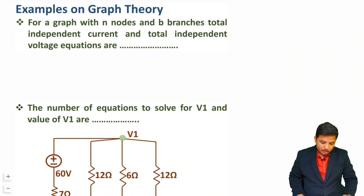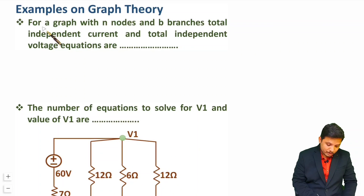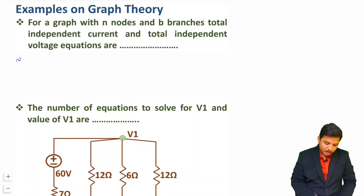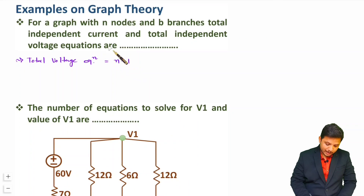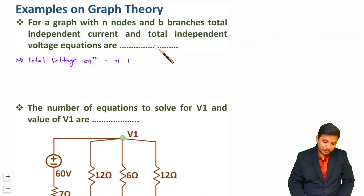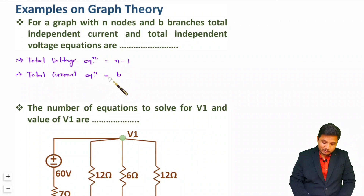Let us see the first question. For a graph with n nodes and b branches, the total independent current and total independent voltage equations are how many? When we talk about total number of voltage equations, that will be n minus 1. For total independent current equations, that will be total number of branches minus number of nodes plus 1.